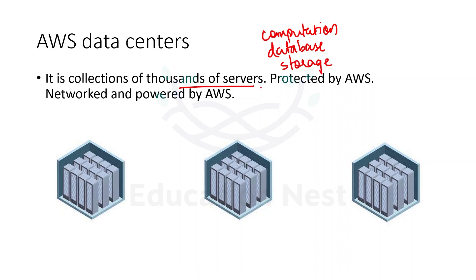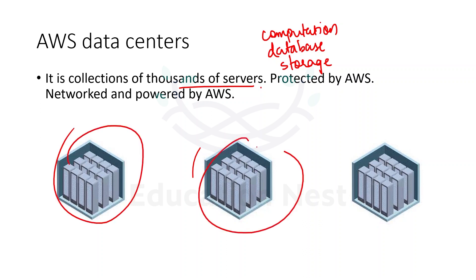Any service that we want, or any service basically running on AWS, would be requiring some servers so that those services can run on that particular server. It is a collection of thousands of servers, and the security of these AWS datacenters is the responsibility of AWS itself.